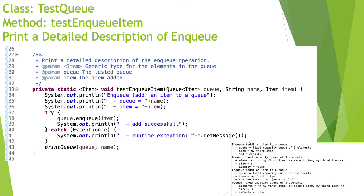We print a detailed description of the operation — the queue and the items we want to add — and then whether the operation was successful or not. If it was not successful, we show what exception was obtained, and then we print the description of the queue again after the operation to see how it was modified.